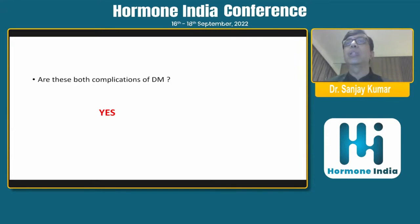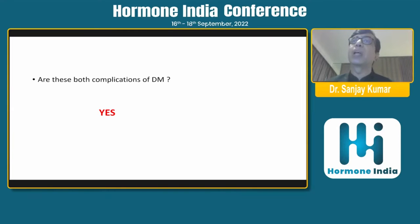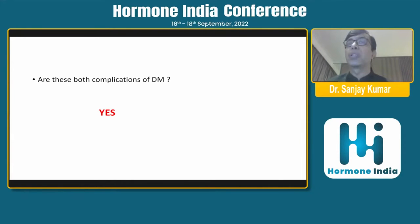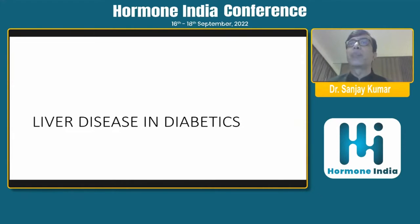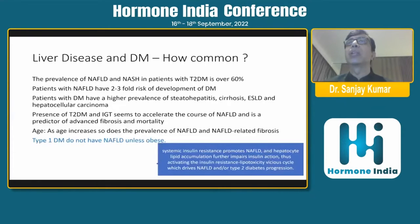Could these have been prevented? Yes, to a large extent. If you diagnose fatty liver in time, when fibrosis is setting in, there are ways to halt it, if not reverse it. So let us see the incidence of liver disease in diabetes and how common these conditions are.